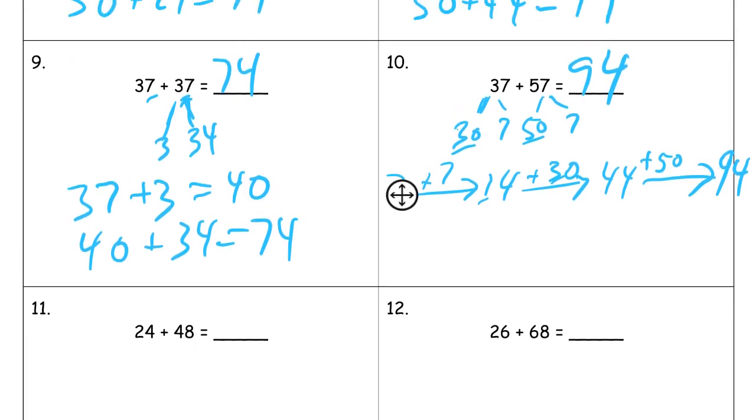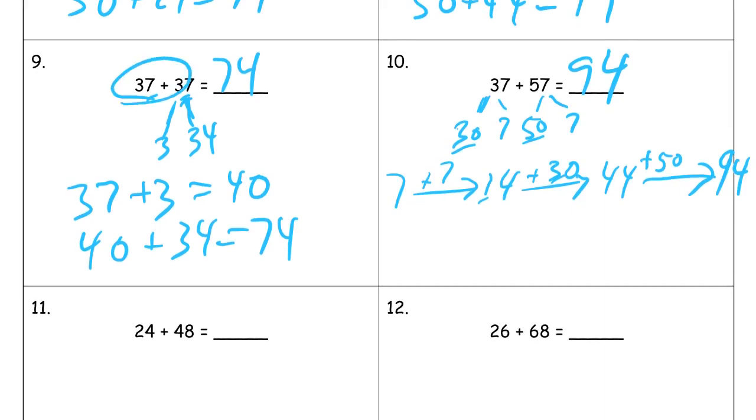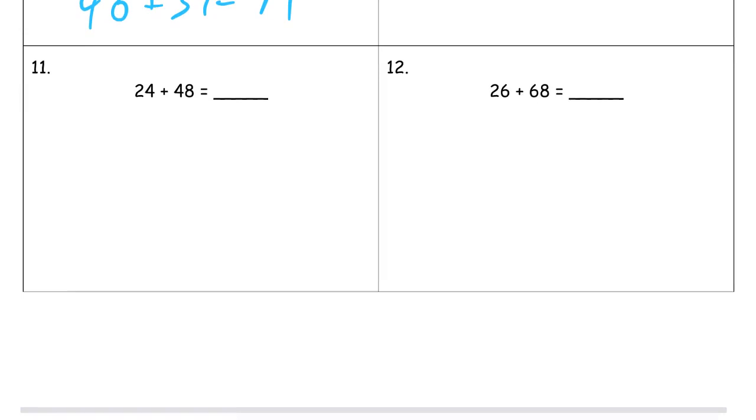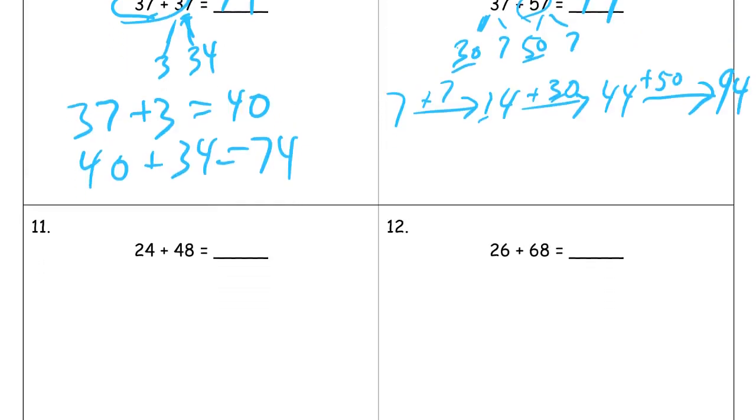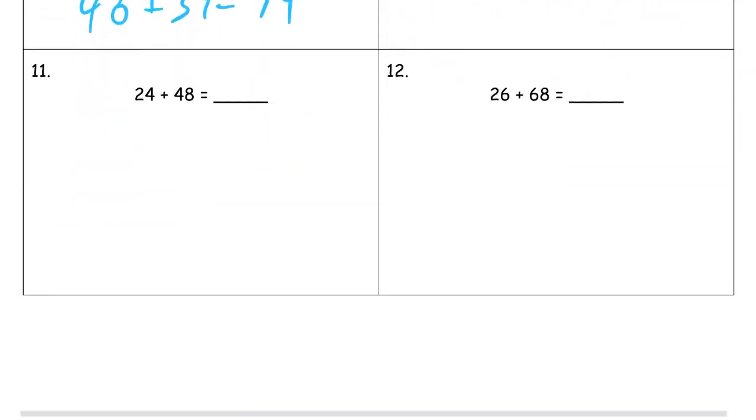You could have also used a trick that now you know what 37 plus 37 is. You could start with that and know that 57 is just 20 more. If you notice that, and you decide to use it, you could. It's not the best way to show your mental math, but you can use it.